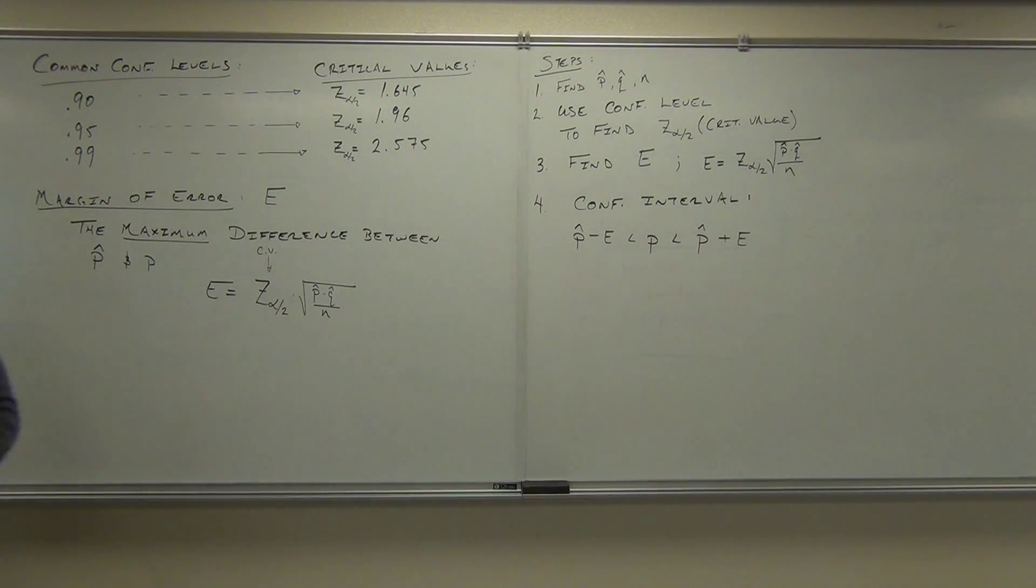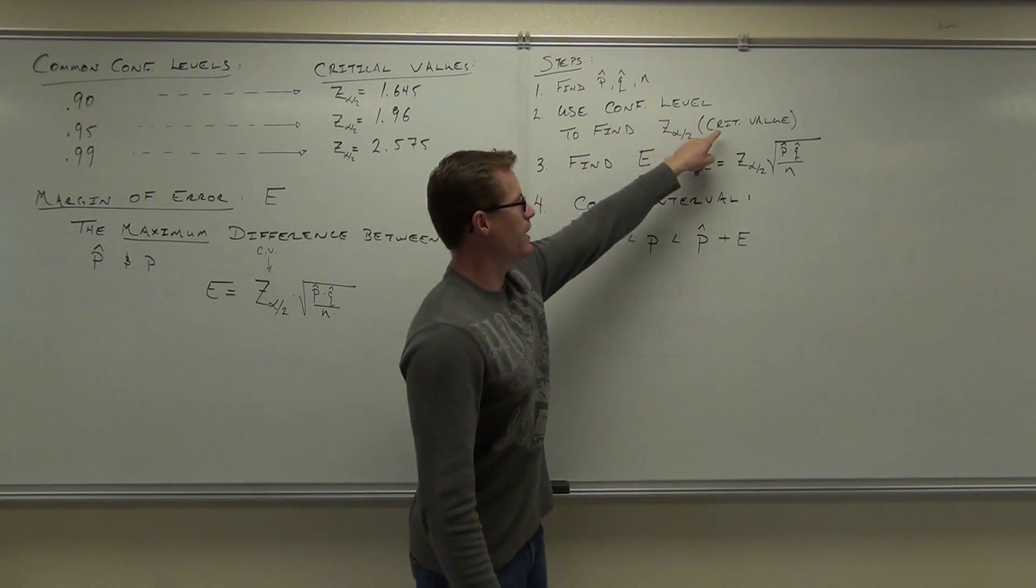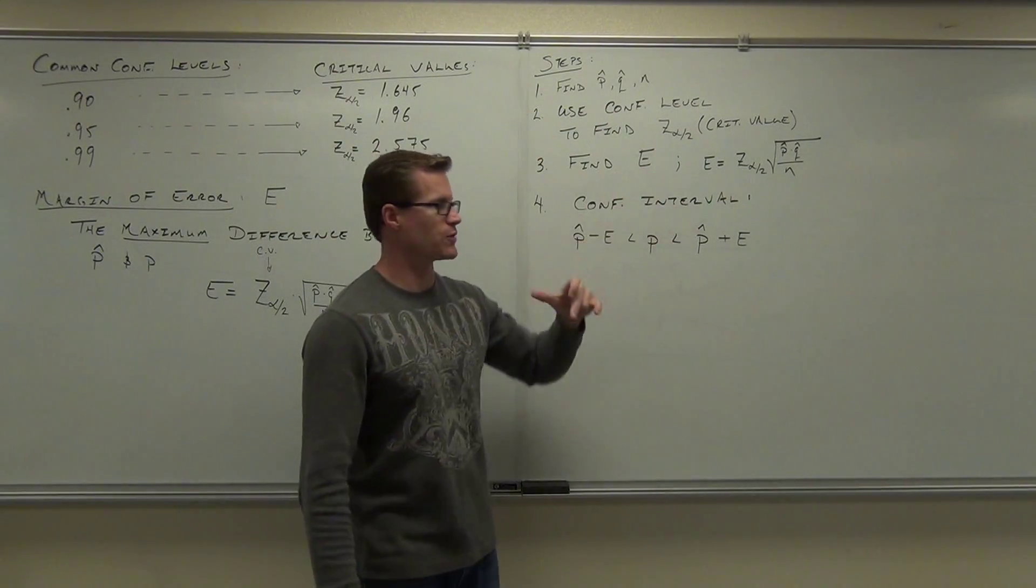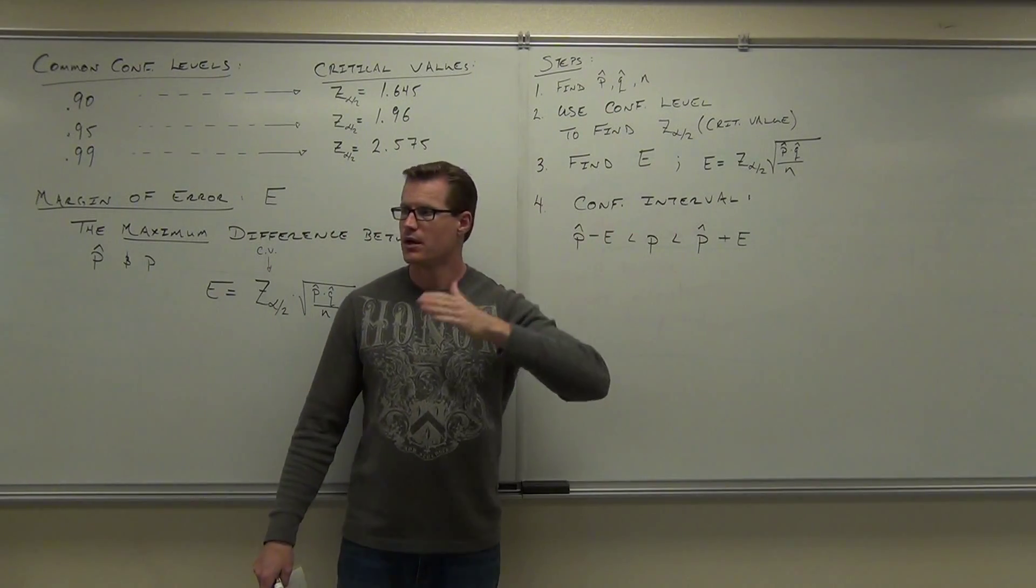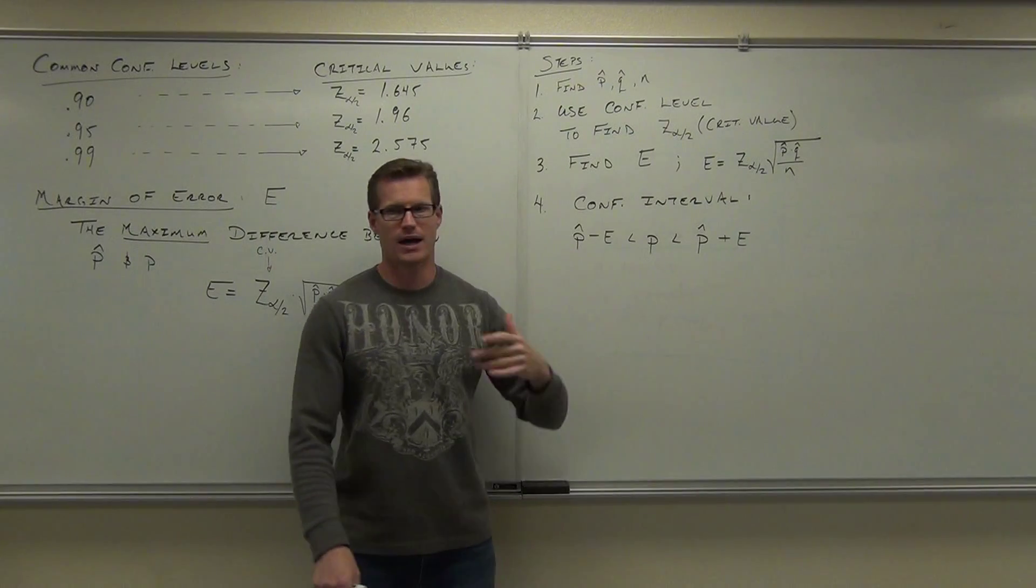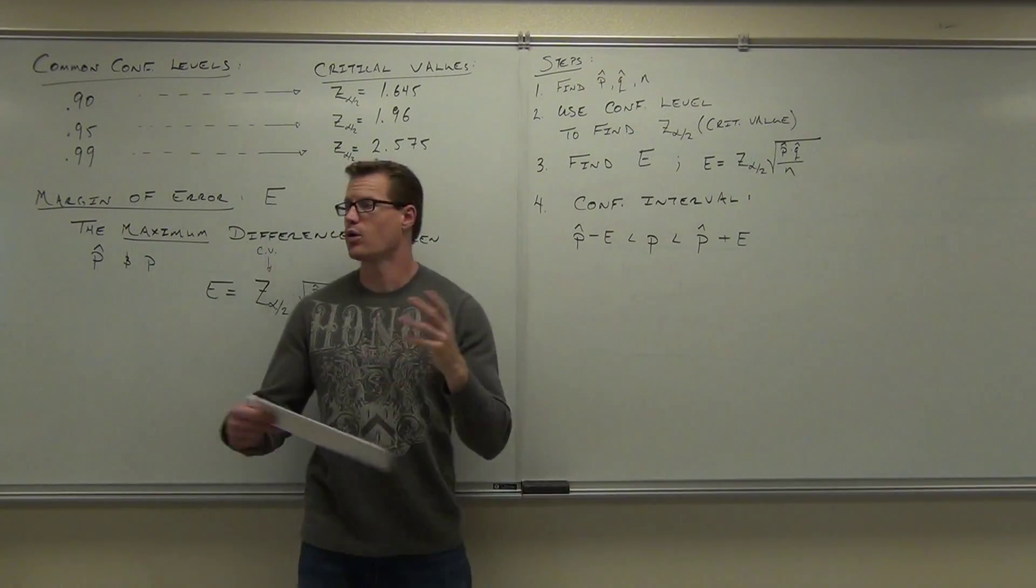So this is how you can structure your confidence interval. We find our P hat, Q hat, and N. We use that in conjunction with the confidence level to find your critical value, find your E. That's the maximum difference. We add that to our P hat. We subtract that to our P hat. And that gives us an interval to which we are a certain amount confident, i.e. a confidence interval, that our population proportion is going to fall in. That's the whole idea here.